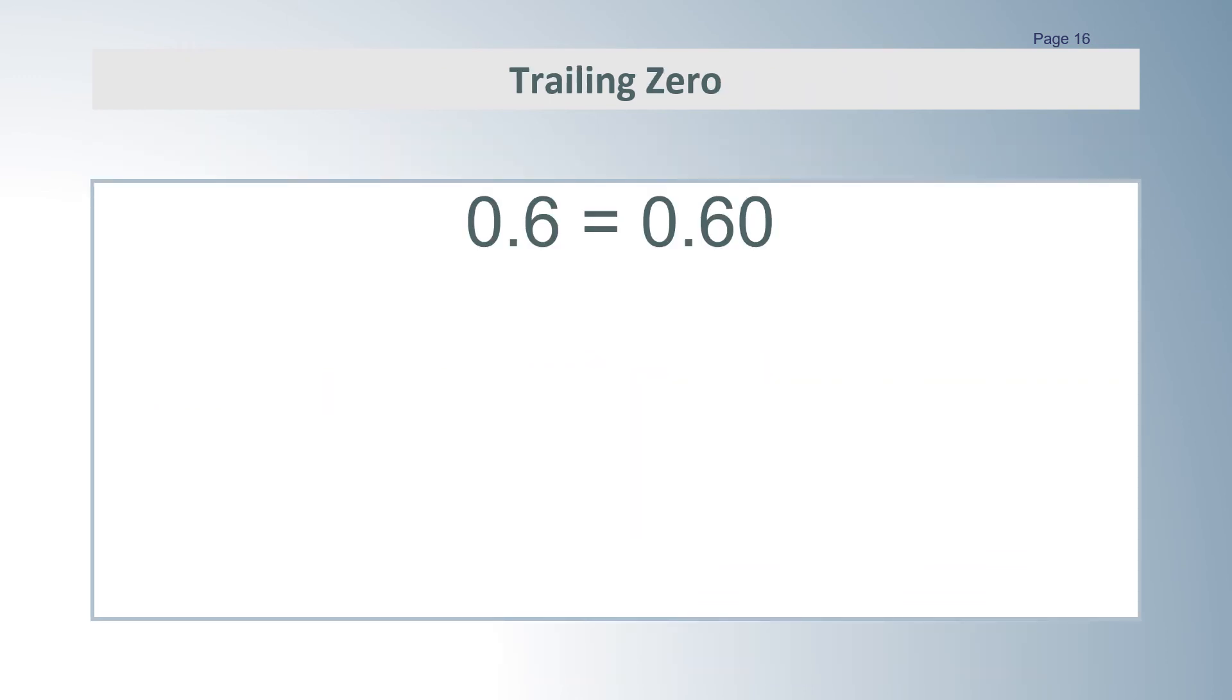The last example compares 0.6 and 0.60. We have already pointed out that they are the same. 6 tenths is the same as 60 hundredths. A 0 on the right-hand end, called a trailing 0, does not change the value.